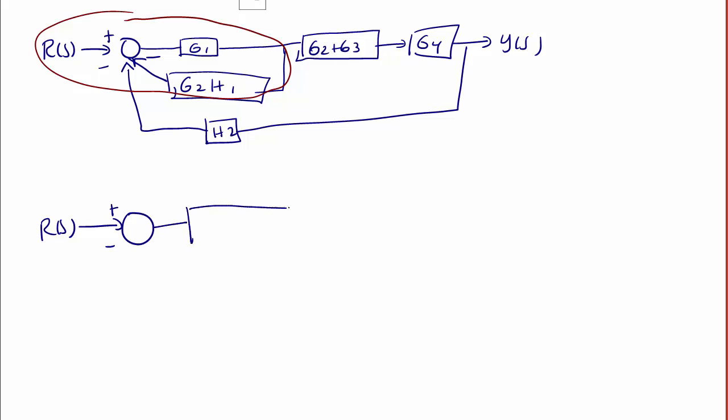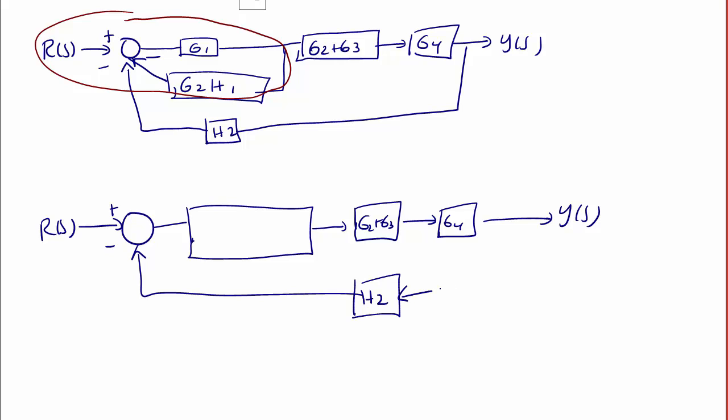The part that I've circled in red is going to become a transfer function by itself. And the output over here is g2 plus g3, here's g4, here's Y(s), and here's h2.